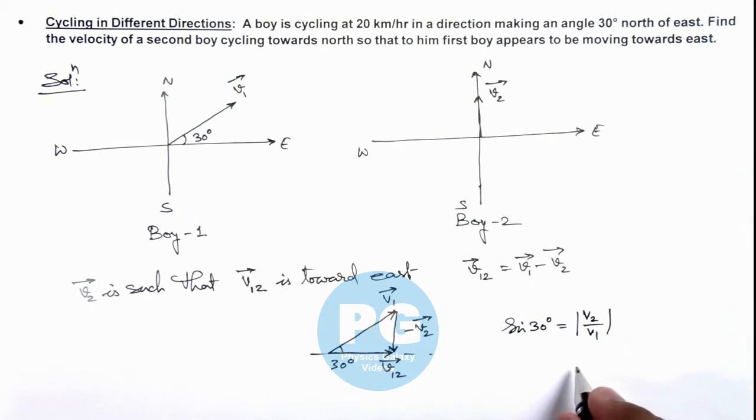So in this situation, the magnitude of velocity of second boy we can write as magnitude of first velocity multiplied by sine 30 degrees. So this will be 20 multiplied by 1 by 2, that is 10 kilometers per hour, that is the final result of this problem.